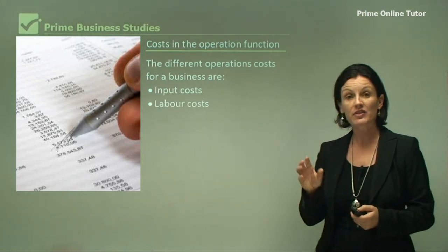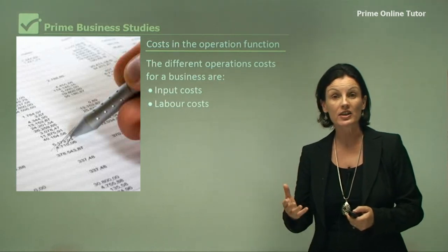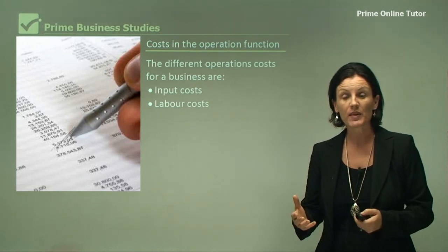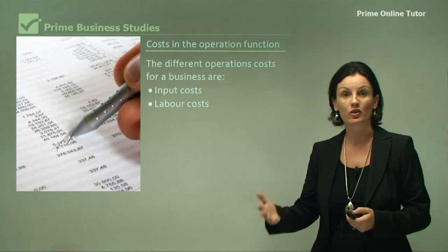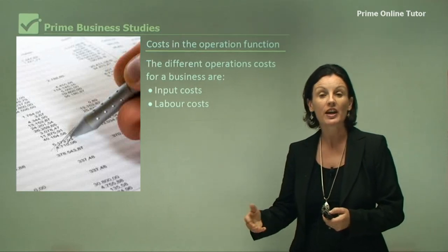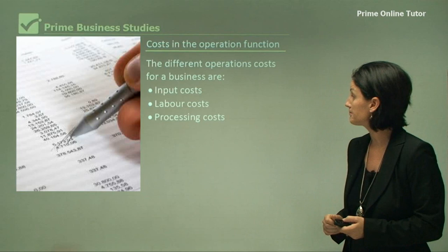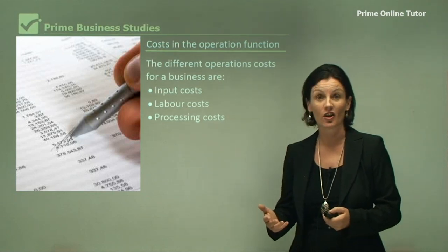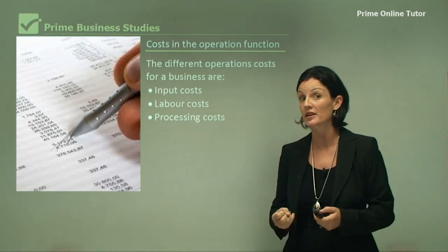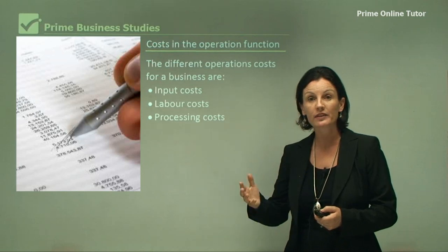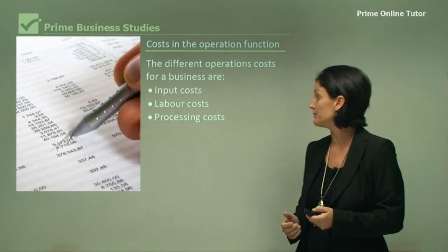You then have specifically your labour costs. Now humans need to have wages, they need to have sick leave, they need to have long service leave. These are all costs for the business. We then have our processing costs — that's actually making the product. So when the machines are running, we are processing a product and that is costly.